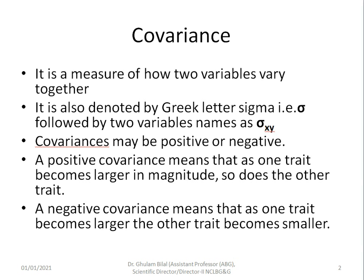Covariance can be positive or negative. A positive covariance means that with an increase in one trait, the other trait would also increase. A negative covariance means that an increase in one trait would result in a decrease in the other trait.